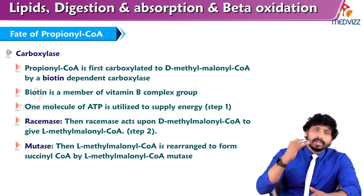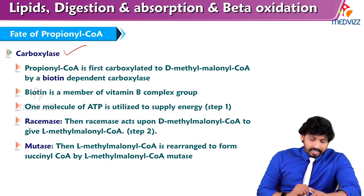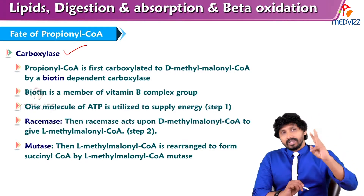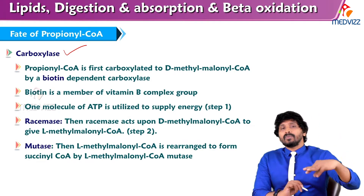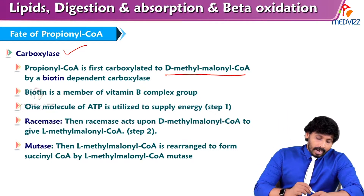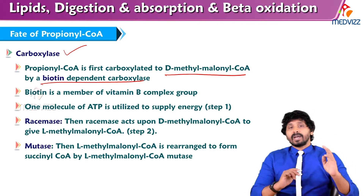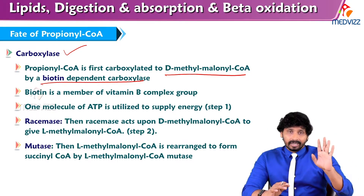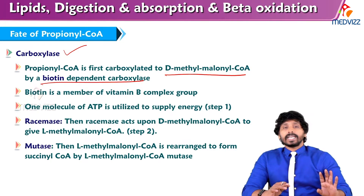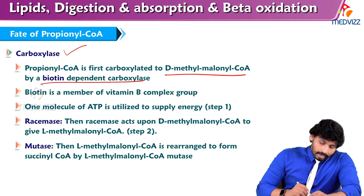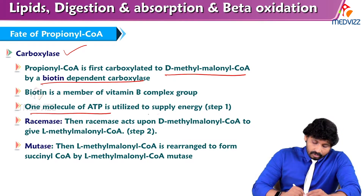What is the fate of propionyl-CoA? Here the enzyme carboxylase comes into action. Propionyl-CoA is carboxylated — it is a 3-carbon compound. Carboxylase adds one more carbon and converts propionyl-CoA to D-methylmalonyl-CoA. It is a biotin-dependent carboxylase. Biotin is vitamin B7, the coenzyme for carboxylase reactions, and it is a member of the vitamin B complex group. One molecule of ATP is utilized to supply energy.